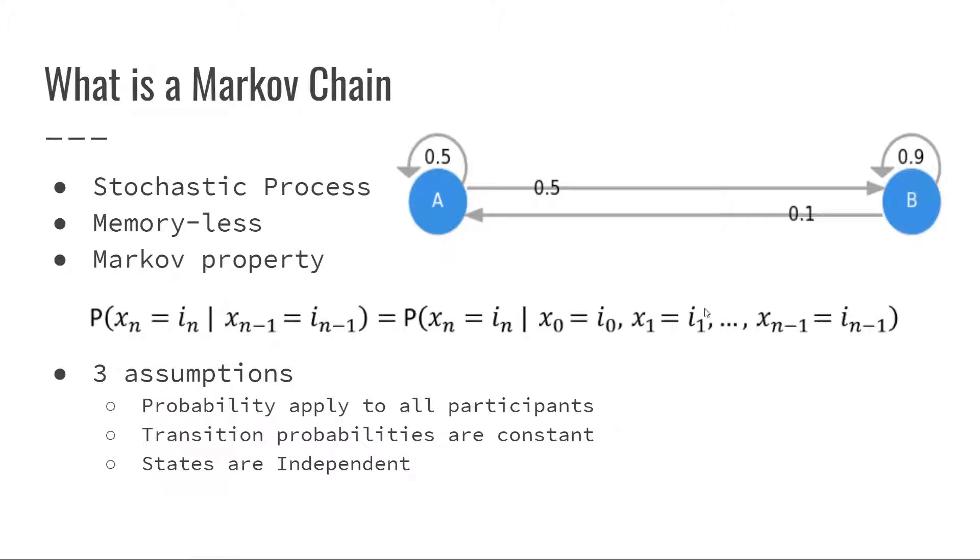We have an equation down here. It's saying that state x_n equals i_n can be determined with x_{n-1}, instead of having everything from every number before n-1. So there are three assumptions to this Markov chain that it must follow. The probability has to apply to all participants in the system, the transitional probabilities are constant and unchanging, and the states are independent over time. As you can see here, here's a small diagram. If we're going from A to B, there's a 0.1 chance probability of going from A to B, and a 0.5 chance of A circling to itself. So that's a very simple Markov chain example.